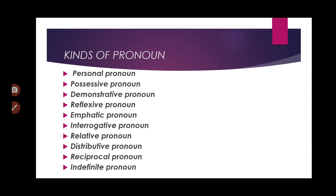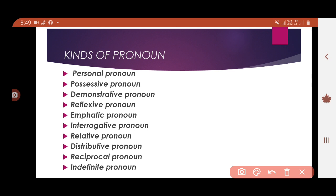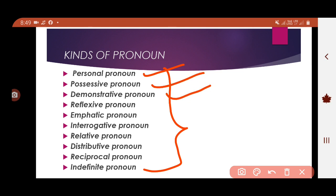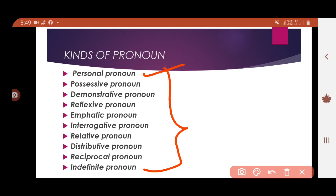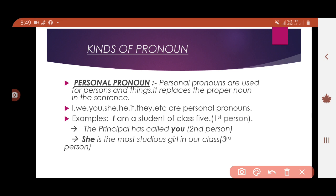Now let's look at the kinds of pronouns. There is a long list: number one is personal pronoun, number two is possessive pronoun, number three is demonstrative pronoun, number four is reflexive pronoun. Then comes emphatic pronoun, interrogative pronoun, relative pronoun, distributive pronoun, reciprocal pronoun, and indefinite pronoun. Today we will learn only two kinds.